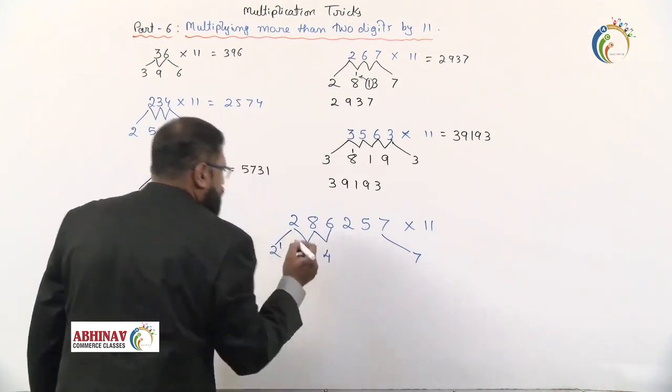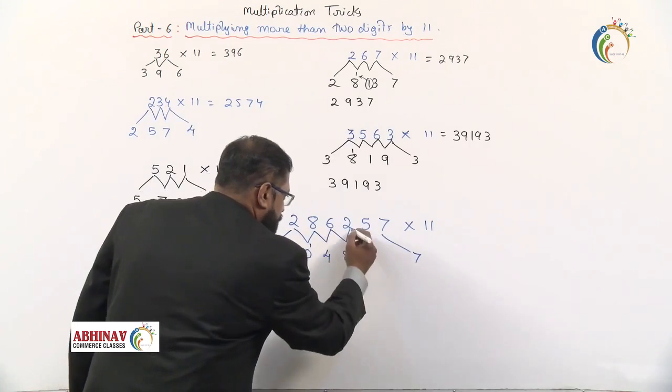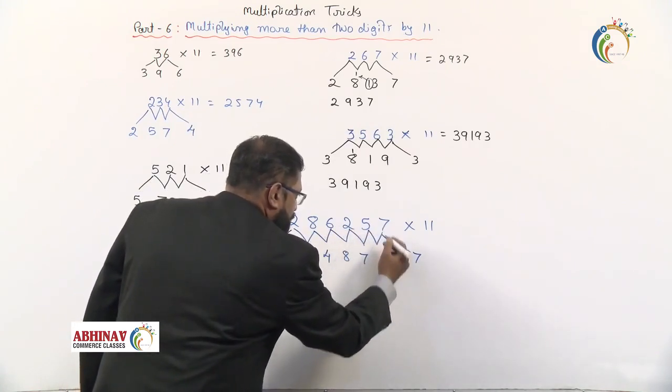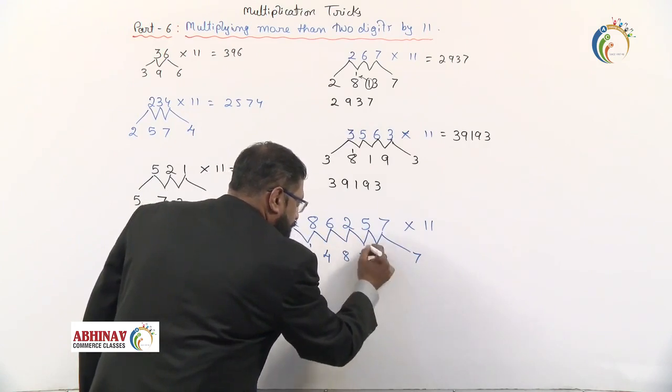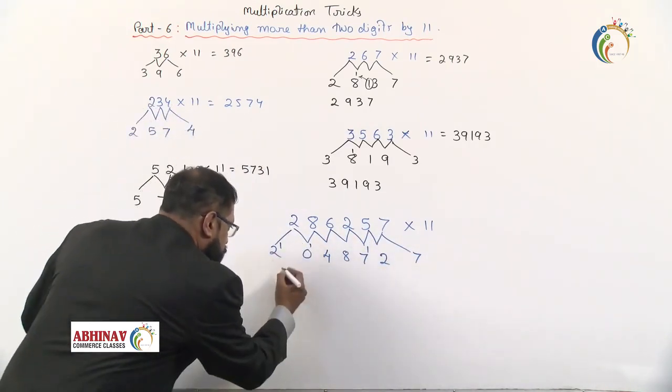6 plus 2 is 8, nothing to carry forward. 2 plus 5 is 7, 5 plus 7 comes to 12, carry forward 1. Now we'll add the carry forwards: 1 plus 2 becomes 3.